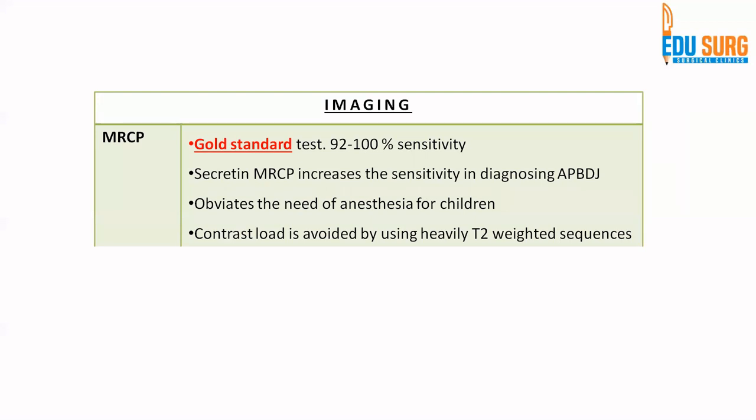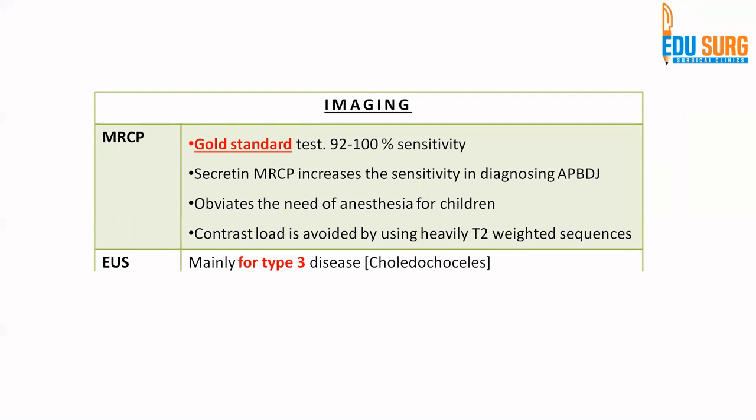MRCP is a T2-weighted MRI without contrast — there is no contrast in MRCP. It is the gold standard with 92% to 100% sensitivity. Secretin-enhanced MRCP increases sensitivity in diagnosing abnormal pancreatic biliary ductal junction. MRCP is useful because no contrast is required; it is a heavily T2-weighted sequence.